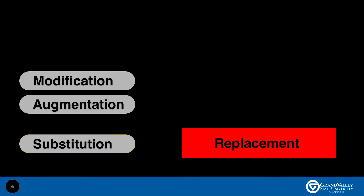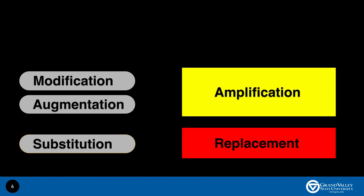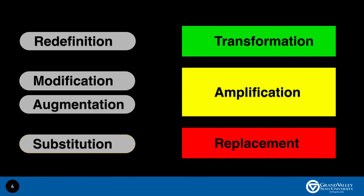The RAT model aligns with the SAMR model where substitution is the same as replacement, where technology just replaces another technology without any change in teaching and learning. Augmentation and modification align with amplification, where technology amplifies the teaching and learning process. And redefinition aligns with transformation, where technology transforms teaching and learning. Both models provide a framework for a more critical perspective on technology integration and can be used by teachers to make informed decisions.